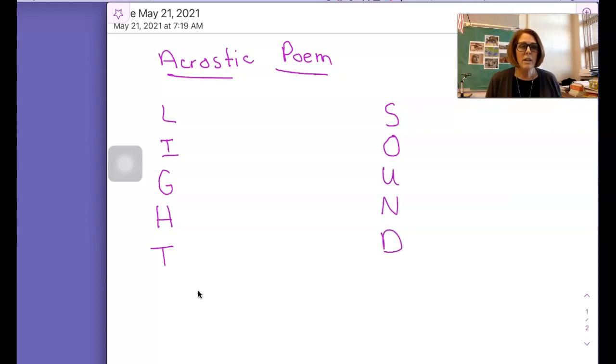And then each letter, you're going to start that line with that letter. So for example, for light, an L word that we might use is lumens. For I, we might say illuminate. And you can go back into your reader, look in the glossary. Maybe there's a sentence that you want to say. G might be glowing.